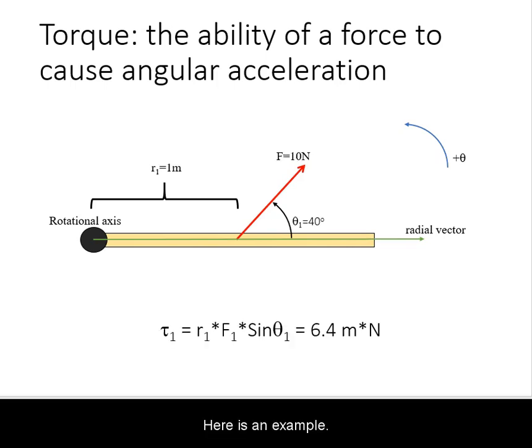Here is an example. A force is applied at 1 meter, the magnitude of the force is 10 newtons, and the angle from the radial vector to the force is 40 degrees. The torque produced by this force is 6.4 meter newtons.